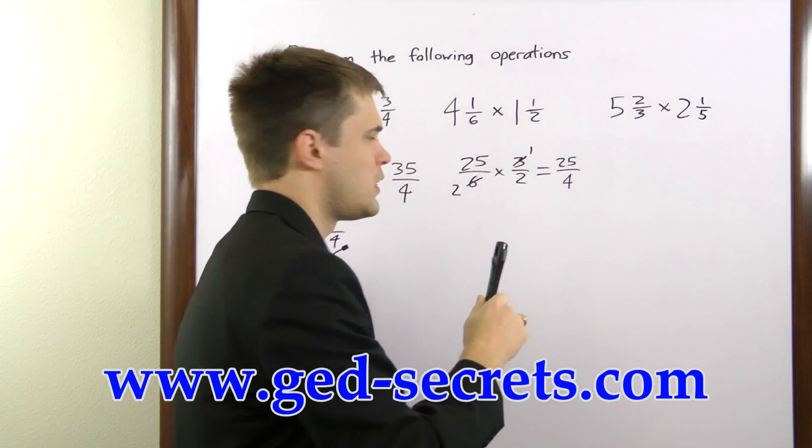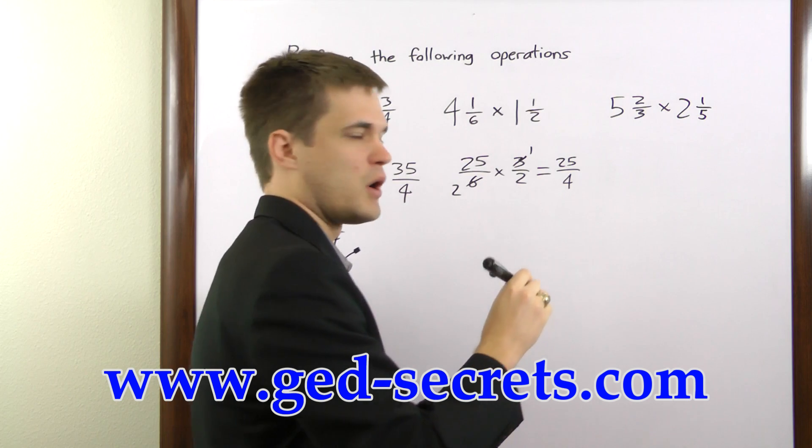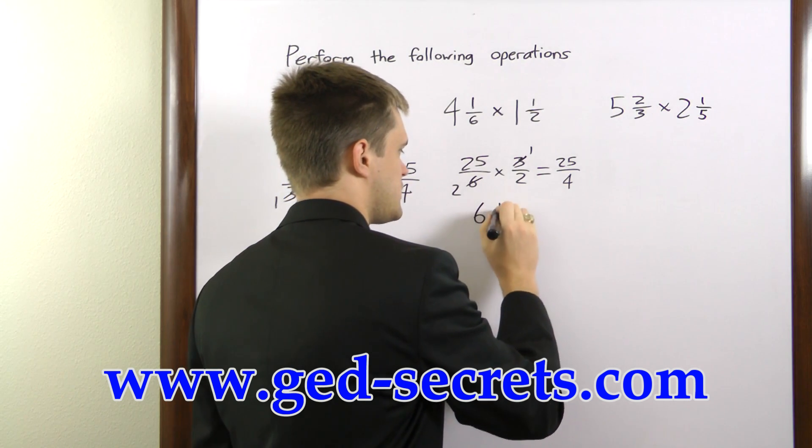25 over 4. 4 goes into 25 6 times, with a remainder of 1, so our answer is 6 and 1 over 4.